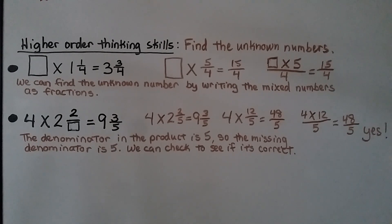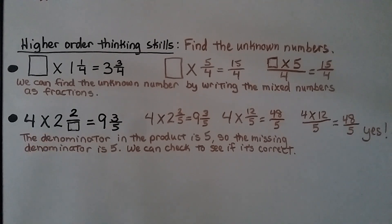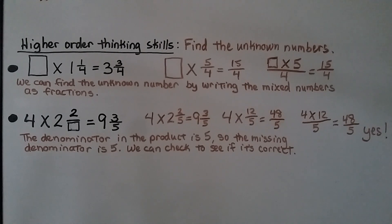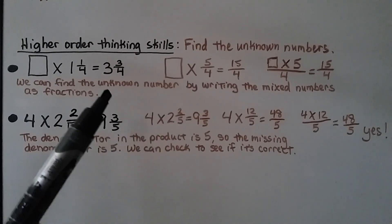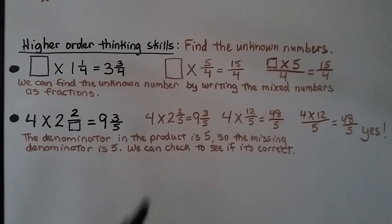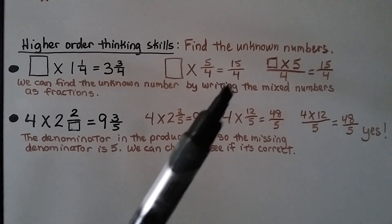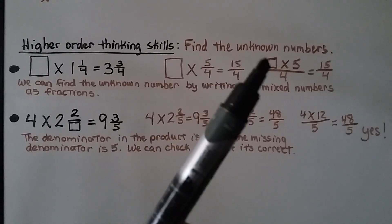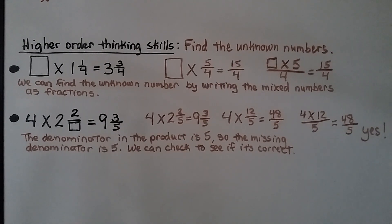Let's do some higher order thinking skills — we need to find the unknown numbers. We have some unknown whole number times 1 and 1 fourth equal to 3 and 3 fourths. We can find this unknown number by writing both mixed numbers as fractions greater than 1. We have 1 and 1 fourth: 1 times 4 is 4, plus 1 is 5 — that gives us 5 fourths. We have 3 and 3 fourths: 3 times 4 is 12, plus the 3 numerator is 15 — we have 15 fourths. We think: some number times 5 fourths equals 15 fourths, so some number times the numerator 5 equals numerator 15. Well, 3 times 5 equals 15. That tells us the missing number is 3.